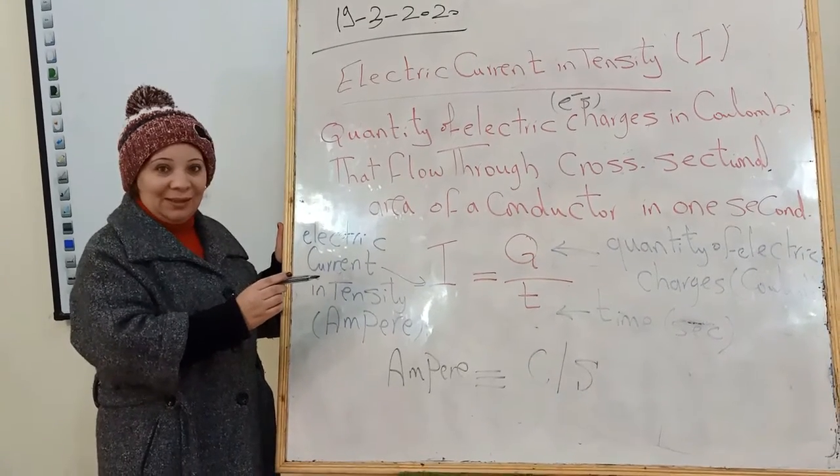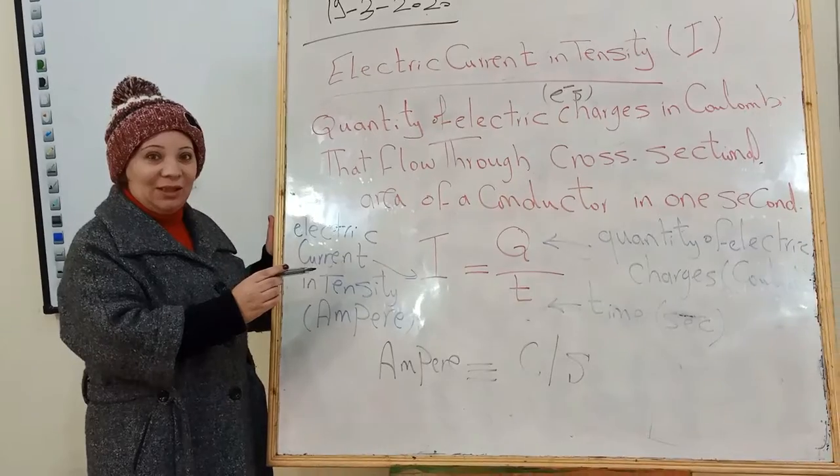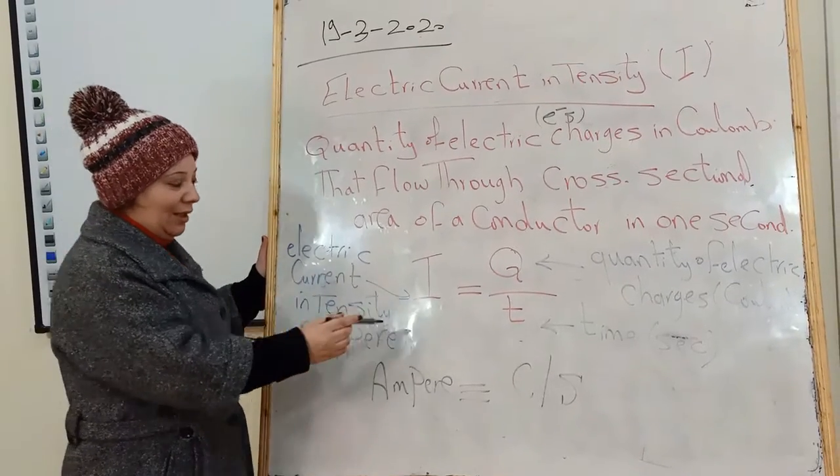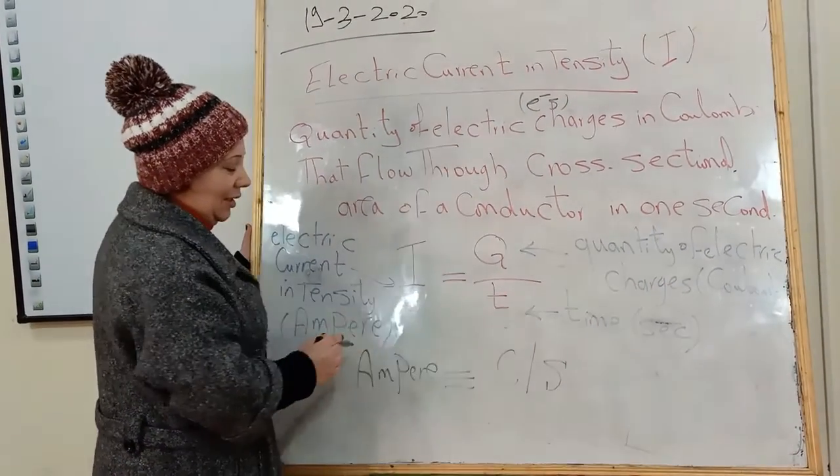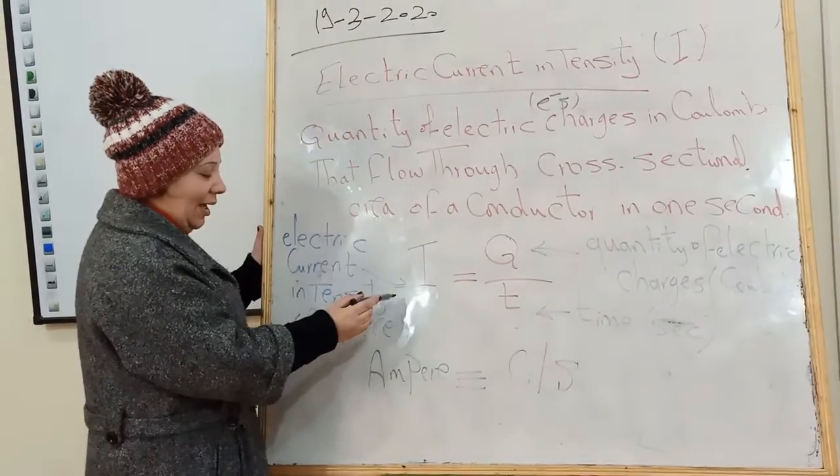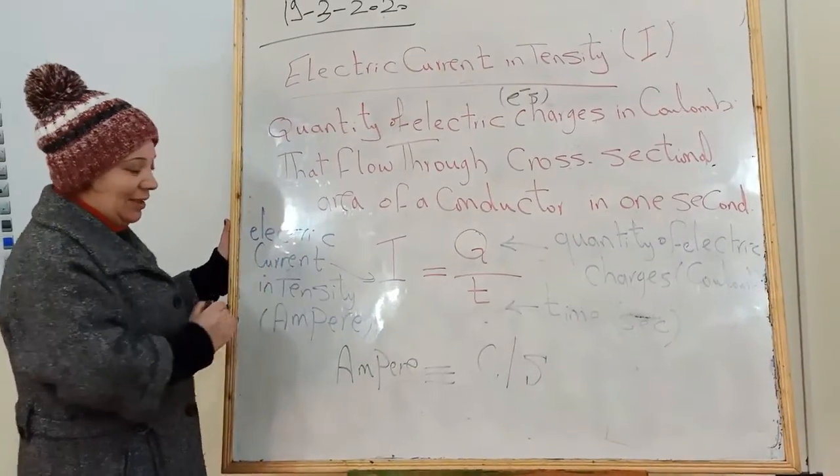We can calculate intensity of electric current. The formula is I equals Q over T. I is electric current intensity.